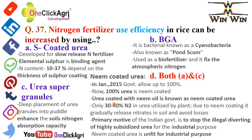Now 100 percent urea is neem-coated. Urea coated with neem oil is known as neem-coated urea, and it contains only 30 to 40 percent nitrogen. Due to neem coating, it gradually releases nitrates in the soil and avoids losses. The primary motive of the Indian government is to stop the illegal diverting of highly subsidized urea for industrial purposes, and neem-coated urea is unfit for industrial purposes.